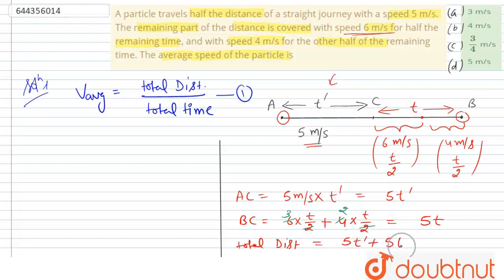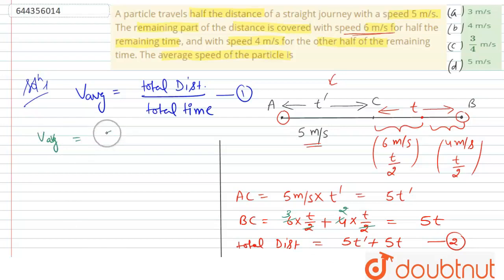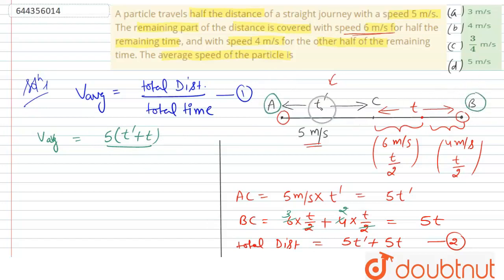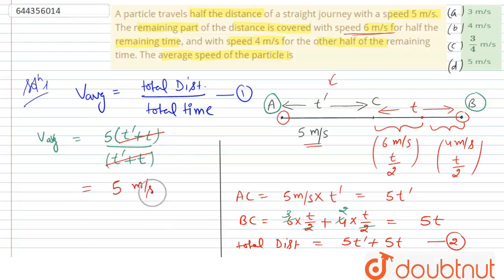So the total distance is 5T' + 5T, which gives us V_average = 5(T' + T) divided by total time. The total time from A to B is T' for the first half distance plus T for the second half distance, so total time is T' + T. The (T' + T) cancels, and V_average comes out to be 5 meter per second.